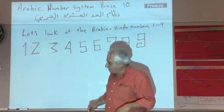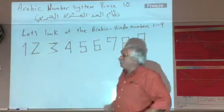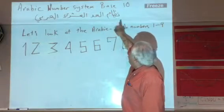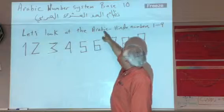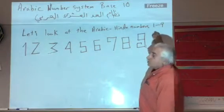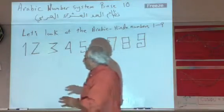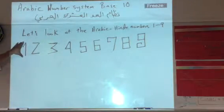Now let's examine the Arabic number system and see if they are aware of what they are talking about or not. We are going to talk about the Arabic number system base 10, and let's look at the Arabic-Hindu numbers 1 through 9. As you can see, 1 through 9 are right here. This is the way they were formed.